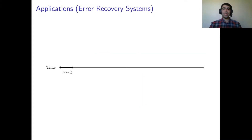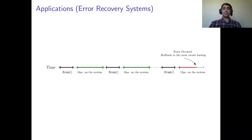The next application of the adaptive partial snapshot type is in error recovery systems. Usually, in these systems, we should take a snapshot of the entire memory every once in a while. As long as there is no error, we continue performing operations on this system. However, when an error occurs, the system must roll back to the most recent backup. With the adaptive partial snapshot type, scanning the system can be implemented in a time-efficient manner. Therefore, we only need to read the entire memory when an error occurs in the system.